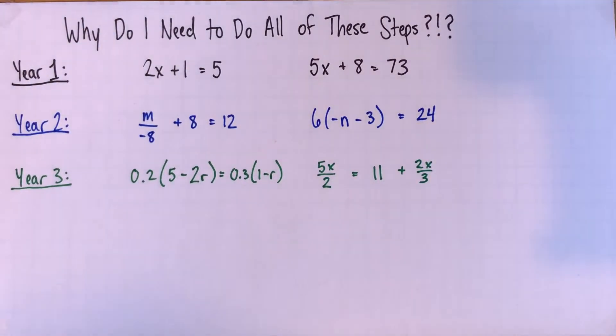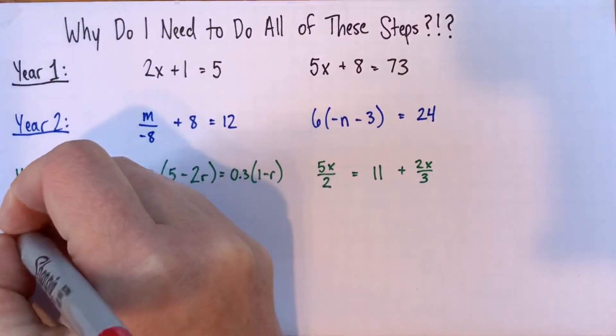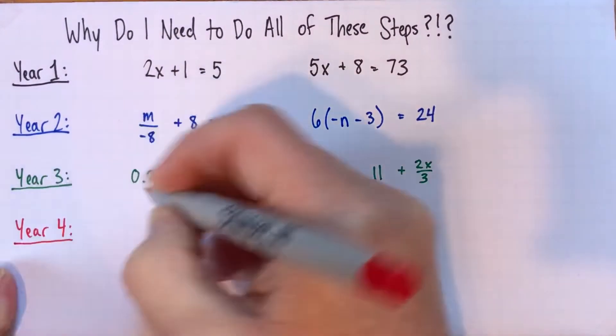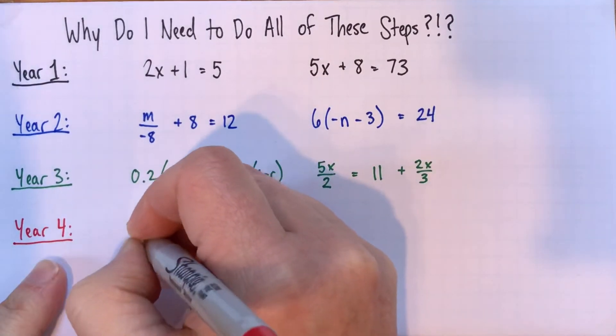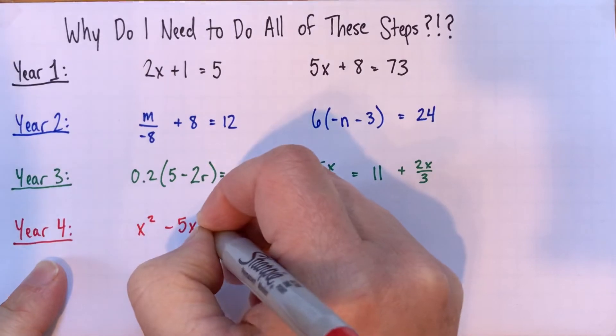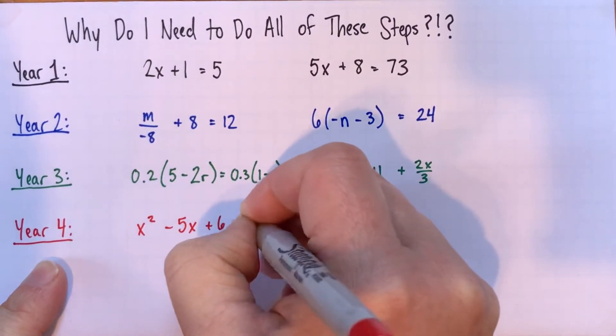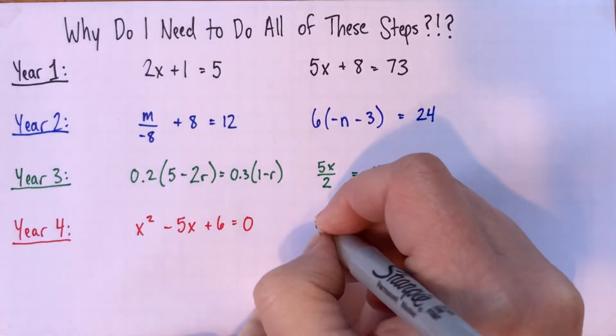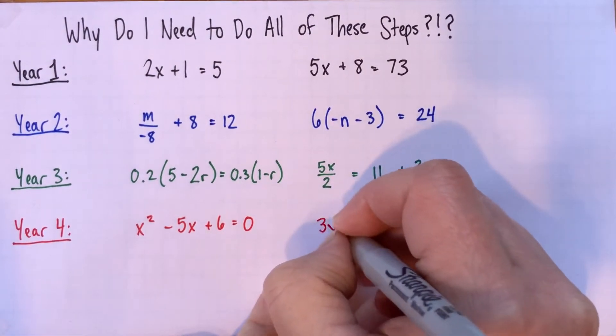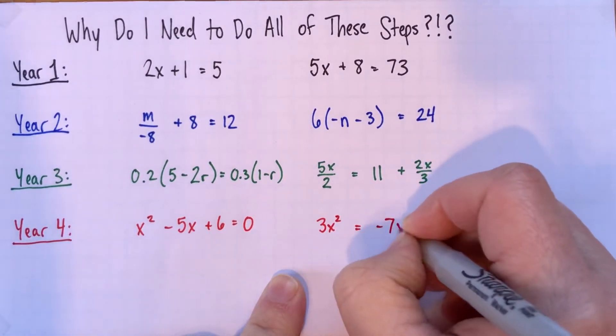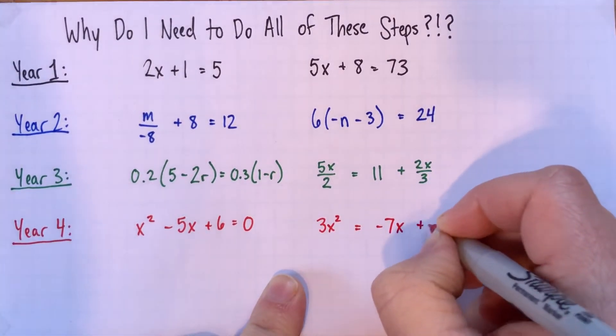So we have equations like x squared subtract 5x plus 6 equals 0. And the interesting thing that starts happening with these equations is there's more than one solution. And then this one here, 3x squared equals negative 7x plus 8.